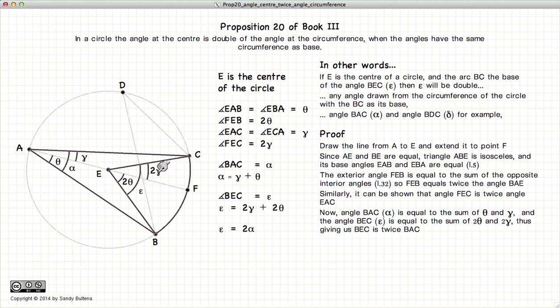Now if we look at all the angles that we have defined, the angle BAC alpha is equal to theta plus gamma. BEC, or epsilon, is equal to 2 theta plus 2 gamma. So here we have that alpha equals gamma plus theta, and epsilon is equal to 2 gamma plus 2 theta. Or in other words, epsilon is equal to 2 alpha.